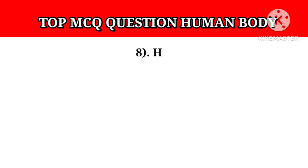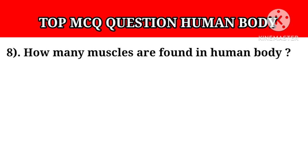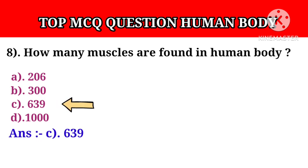Question number 8: How many muscles are found in the human body? Option A: 206. Option B: 300. Option C: 639. Option D: 1000. Answer C: 639.